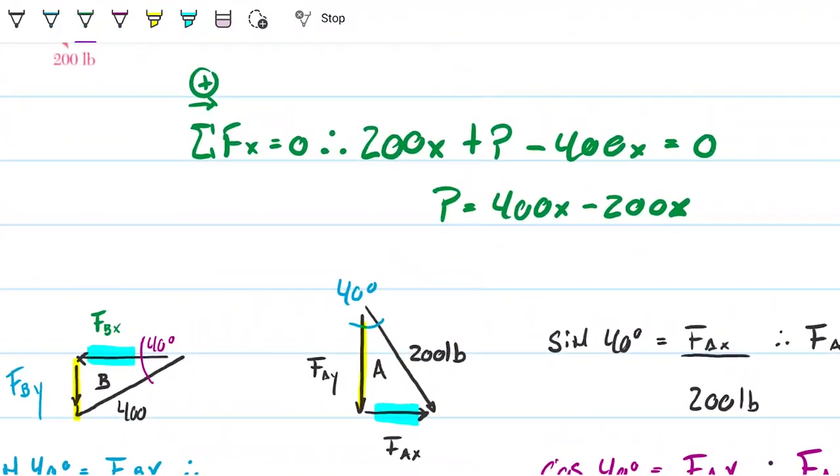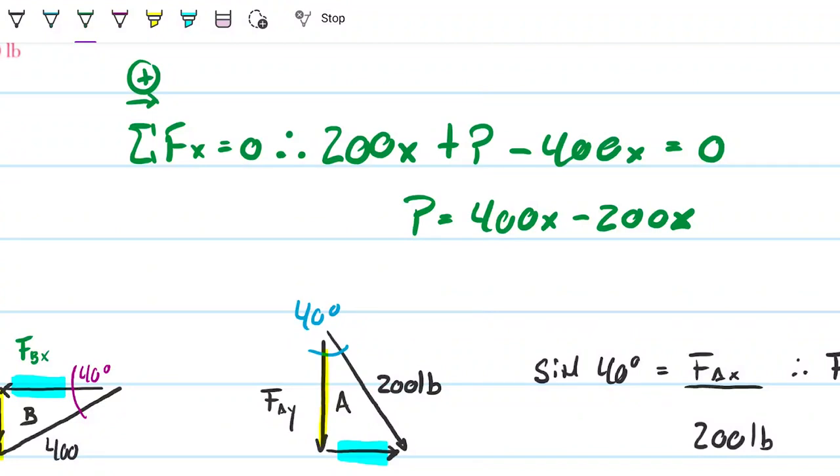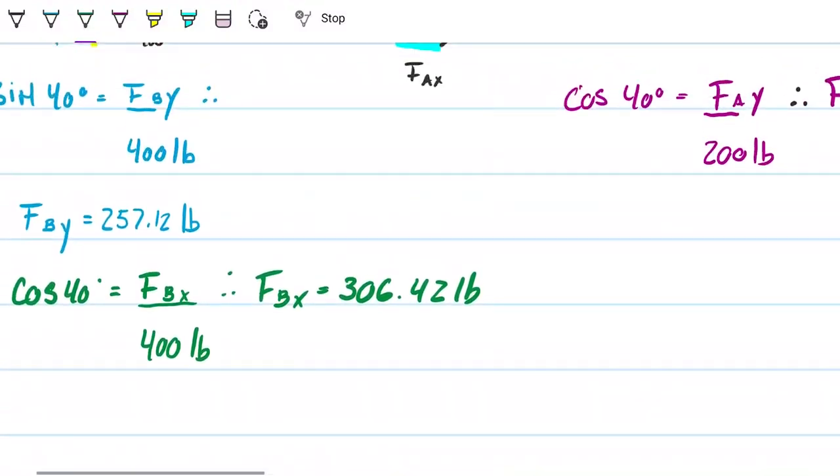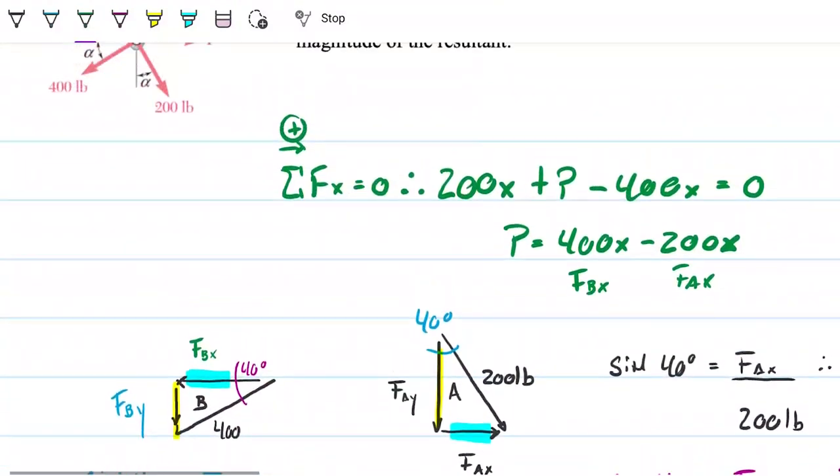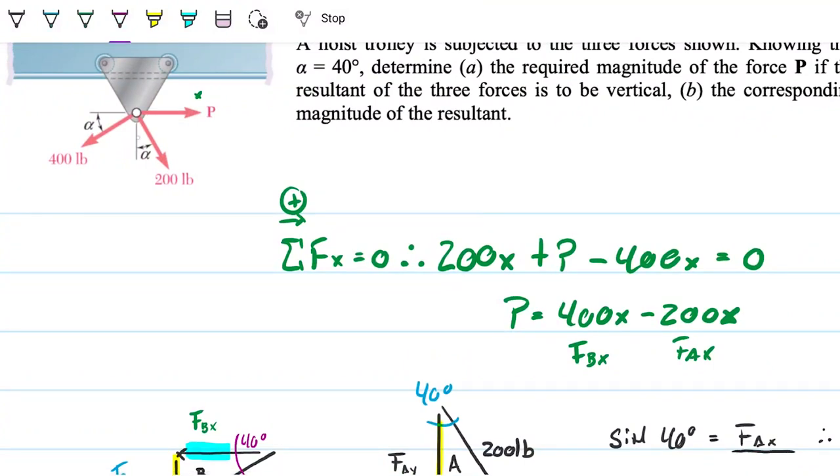So what does that mean? Well, if we go back to what we decided, if we want to find out P, P is pointing to the right, and we want the whole thing to cancel out. Basically what we want is the difference between the two. So the difference between the 400x component that we're now calling f bx and the 200x which we're calling f ax. So in other words, check out what's going on. We have, if we recall the hoist there, we have 153 pounds pointing to the right. We have from the 400, we have 128 pointing to the right, and we have 306 pointing to the left.